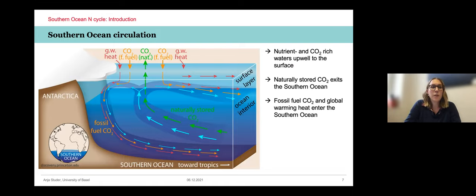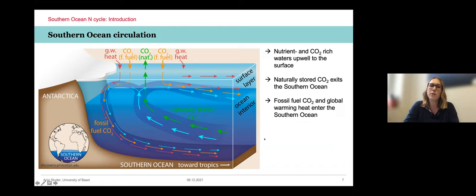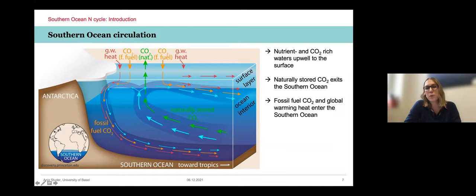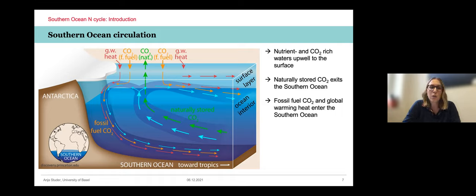The Southern Ocean is the place where the deep ocean and the atmosphere connect. You can see a section through the Southern Ocean with Antarctica on the left-hand side. Deep waters that are rich in nutrients and CO2 come to the surface, and natural CO2 is outgassing into the atmosphere. At the same time, ocean circulation flows partly northwards to form intermediate waters and partly southwards to form deep waters. Those intermediate and deep waters take up CO2 and heat from global warming and put it back into the ocean.